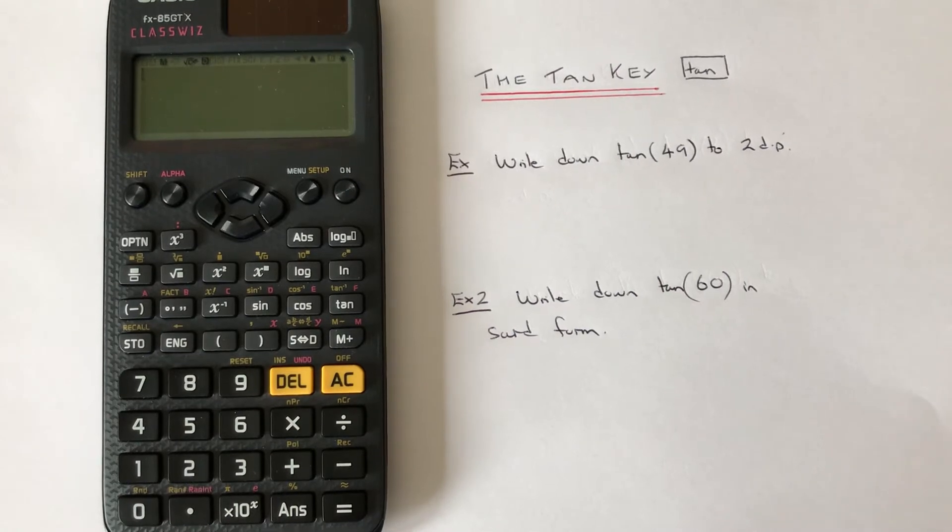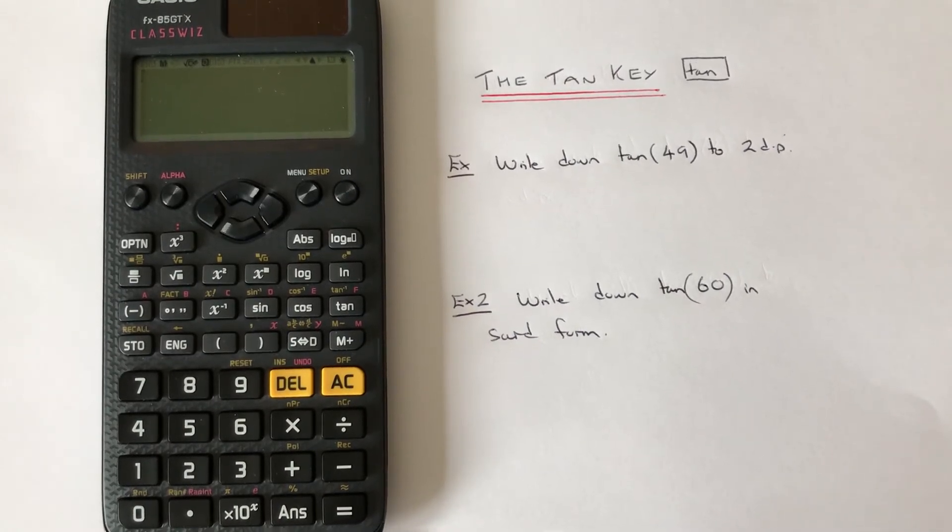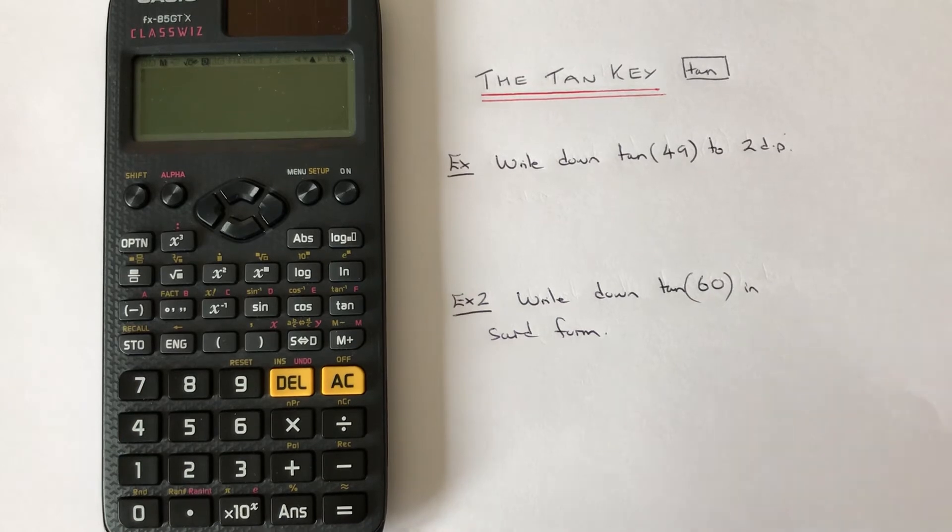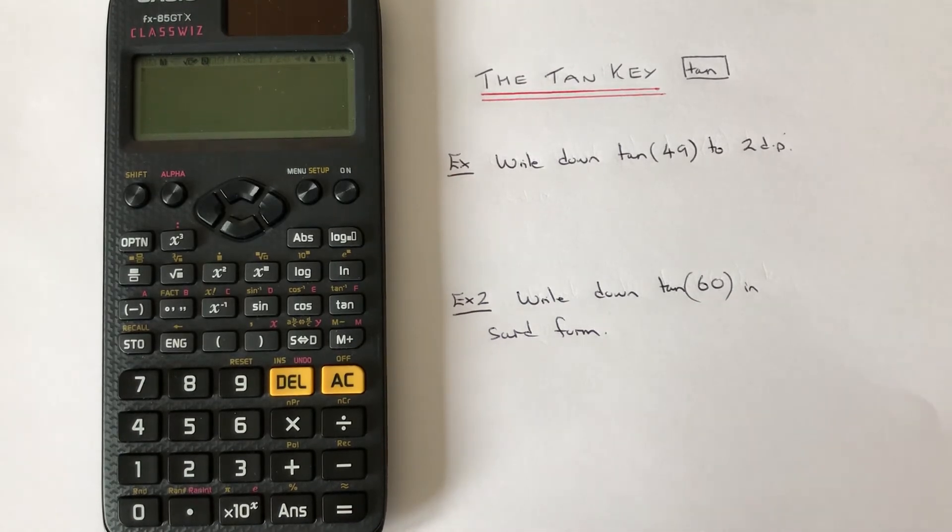Hi guys, welcome back. This is Maths 3000. Today I'm going to show you what the tan key does on a Casio Classwiz scientific calculator. What it does is it converts the angle into a decimal or a fraction. Let's have a look at the two examples here.